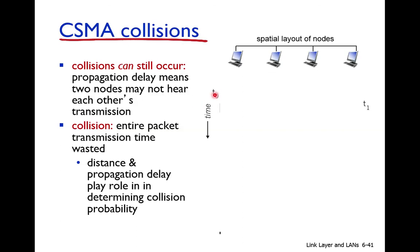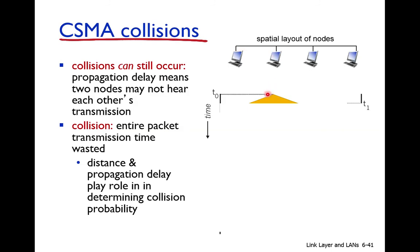Another example showing collision is still possible in CSMA: consider a timeline. Suppose at time t0, this node senses the medium and finds it free — there is no signal. So this node starts transmission and the signal moves in both directions along the link.